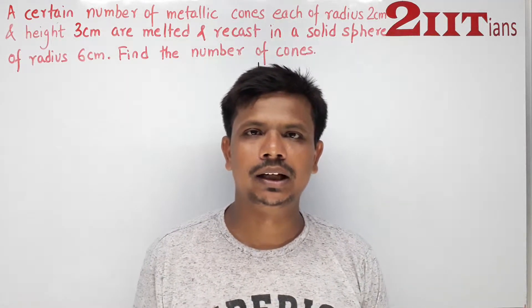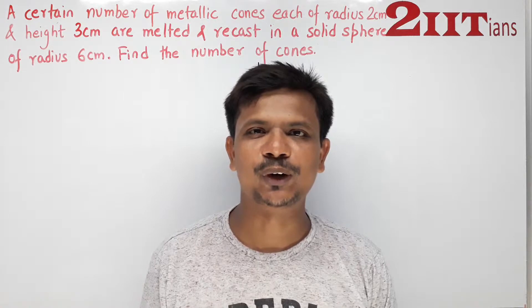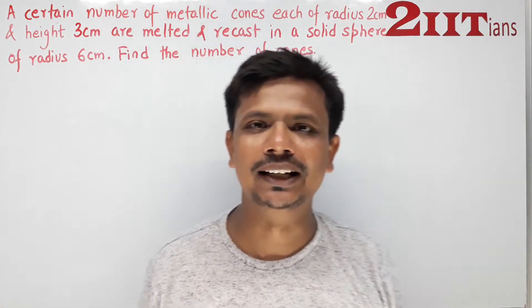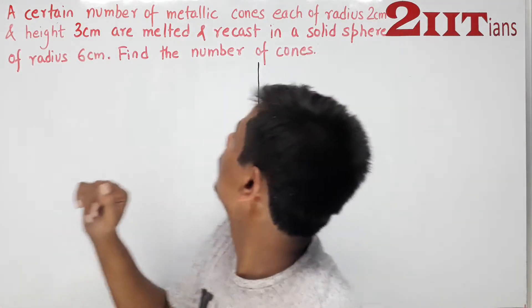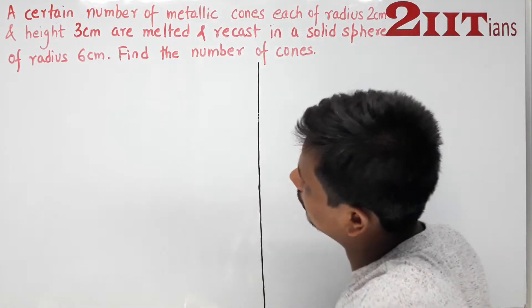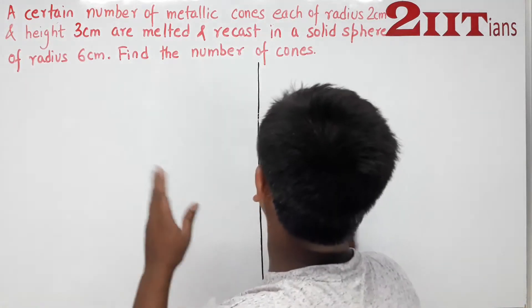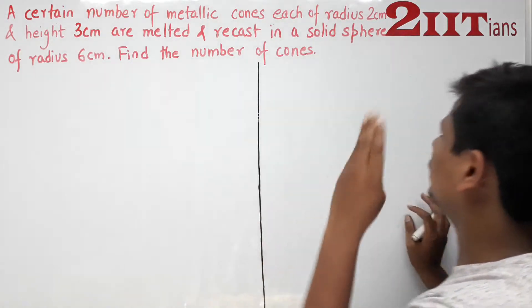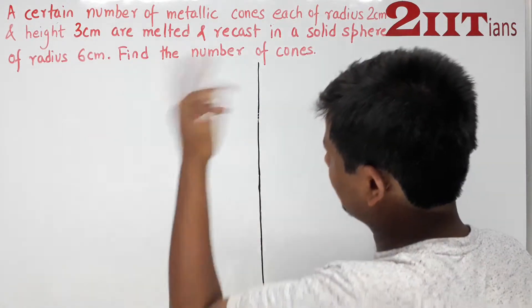Subscribe and press the bell icon to never miss a video from 2 IITians. A certain number of metallic cones, each of radius 2 centimeters and height 3 centimeters, are melted and recast into a solid sphere of radius 6 centimeters. Find the number of cones.